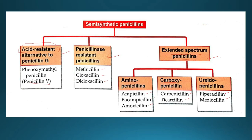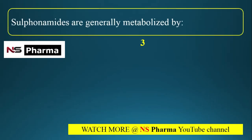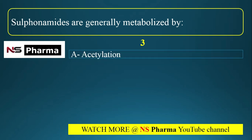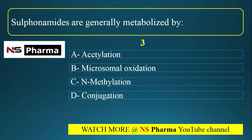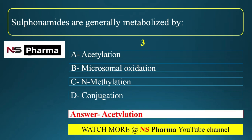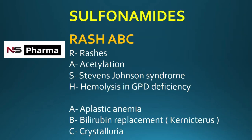Now the third question: sulfonamides are generally metabolized by. Options are: option A, acetylation; option B, microsomal oxidation; option C, N-methylation; option D, conjugation. The correct answer is option A, that is acetylation. Sulfonamides are generally metabolized by acetylation.